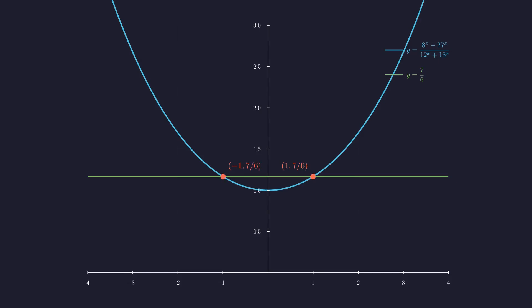The solutions to our equation are simply the x-coordinates where these curves cross, and there they are. The intersections occur exactly at x = -1 and x = 1, confirming our algebraic work.